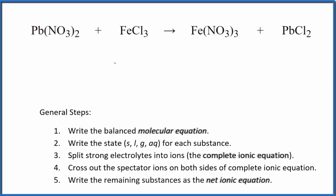In this video, we'll write the balanced net ionic equation for Pb(NO3)2 plus FeCl3. That's lead 2 nitrate plus iron 3 chloride. So the first thing we need to do with net ionic equations is balance the molecular equation. This is the molecular equation.